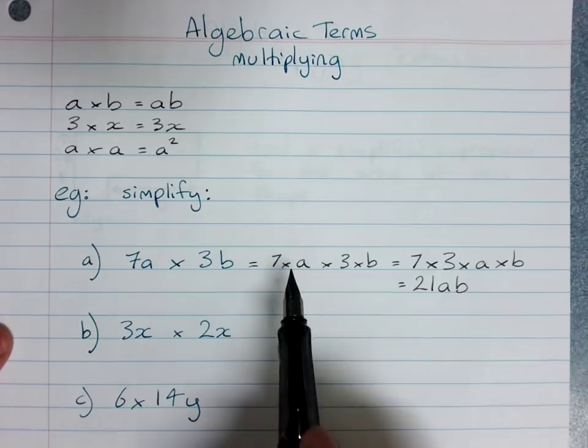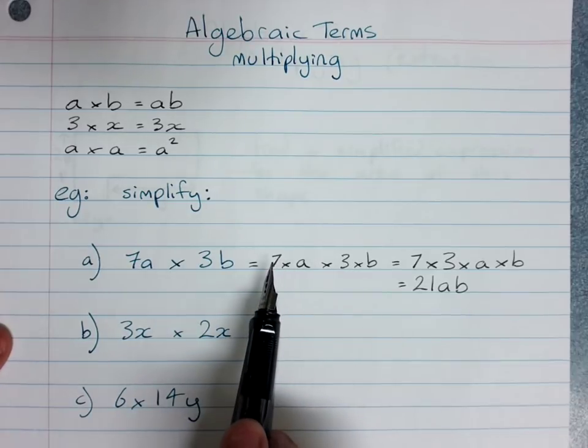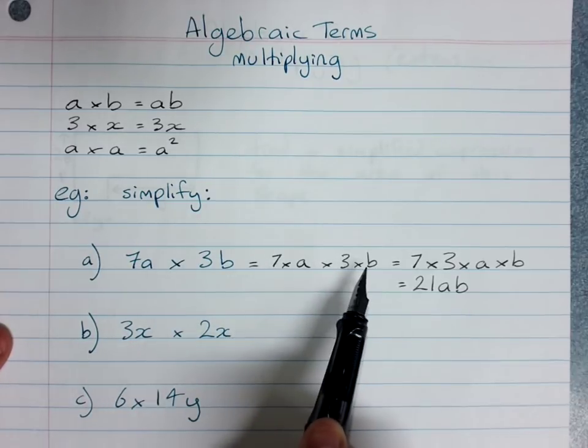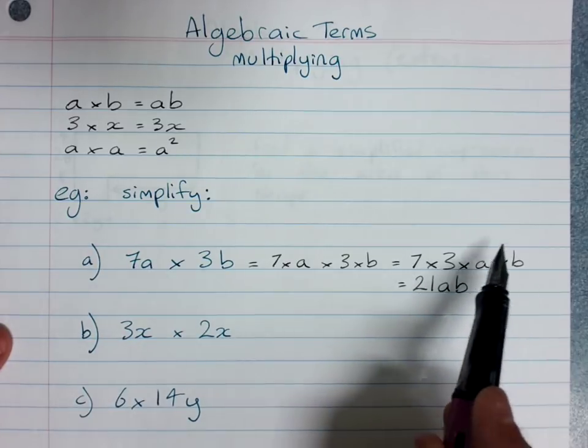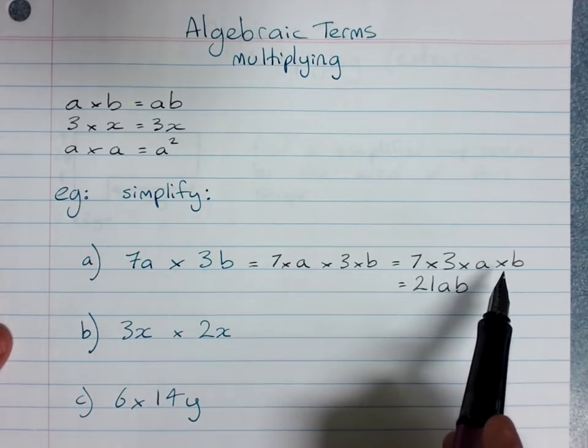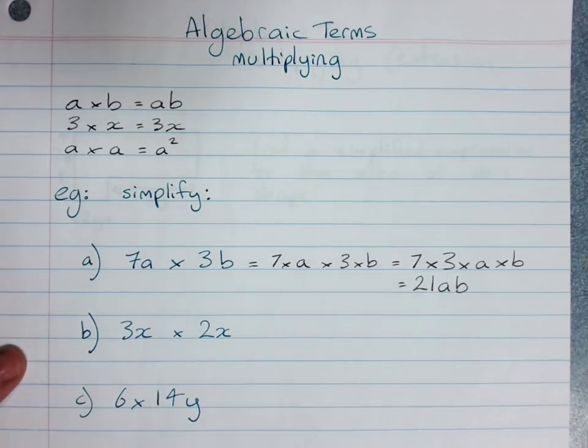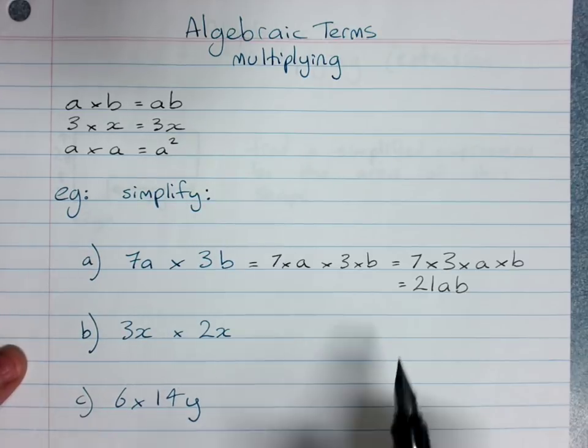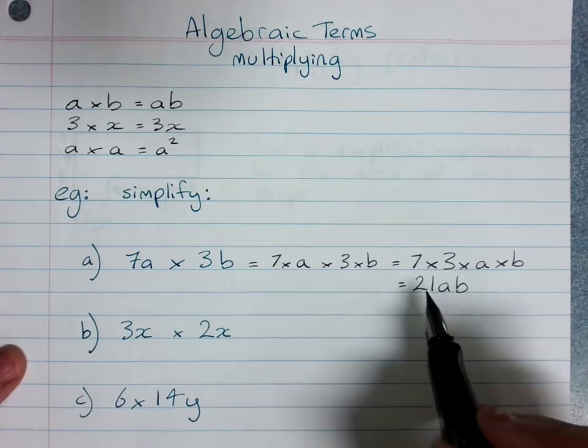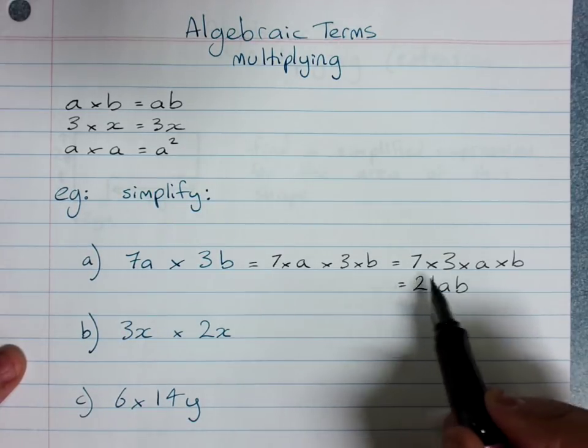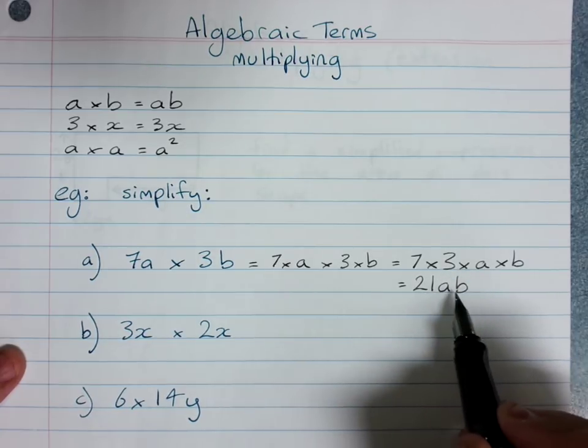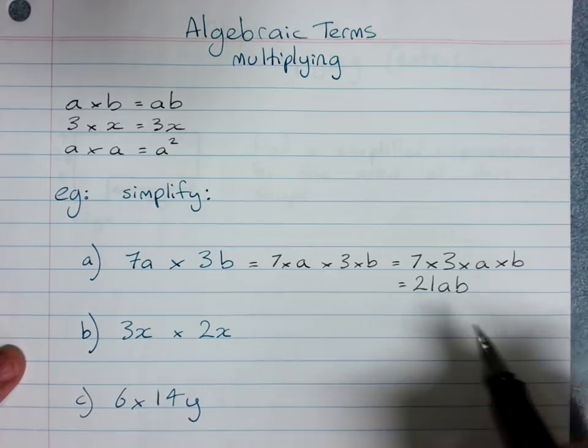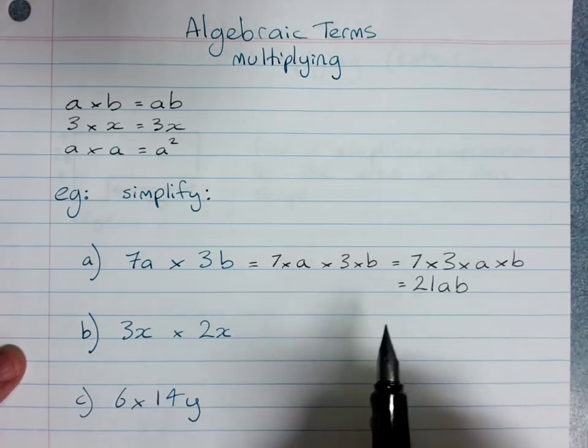Now you can actually always do it like this: expand it out, rearrange so the numbers are at the front and the letters are at the back except any little powers, and multiply the numbers, get rid of the multiplication signs for the letters and here's our answer. So you can always use this strategy.